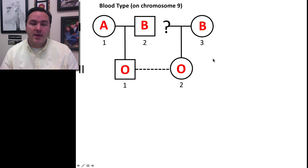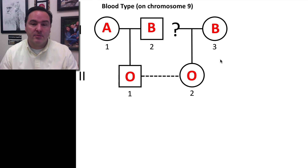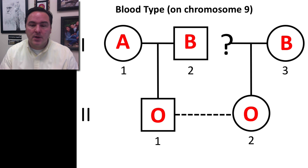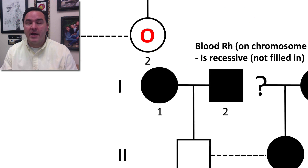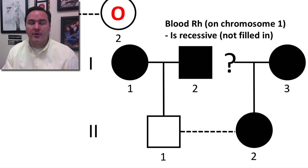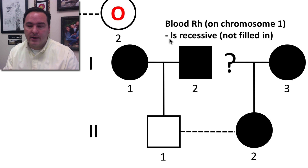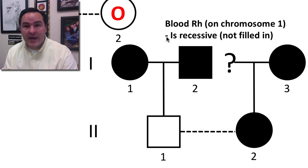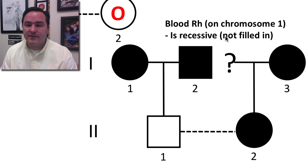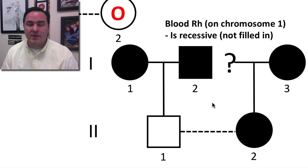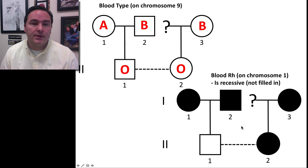We can also look at other characteristics, like blood type. Here are the blood types of the five individuals. We can also look at Rh factor, another part of the blood. Rh negative blood type is recessive, and that is represented by the not-filled-in phenotypes.